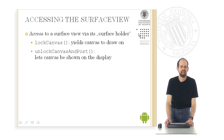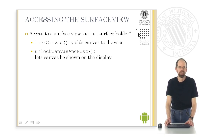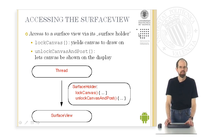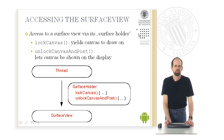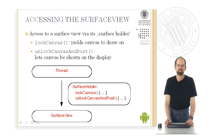The SurfaceView object is accessed via its SurfaceHolder. A SurfaceHolder defines two methods: first, lockCanvas, which yields a canvas to draw on; and unlockCanvasAndPost, which has the canvas displayed on the screen. The thread calls operations on the SurfaceView using the SurfaceHolder. lockCanvas yields the canvas to be drawn upon, and unlockCanvasAndPost has it displayed on the screen.